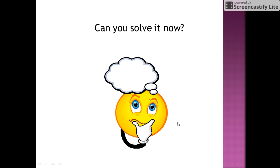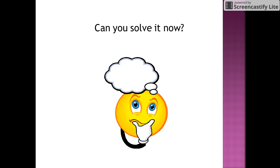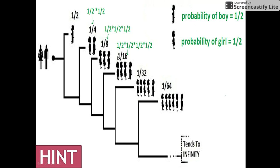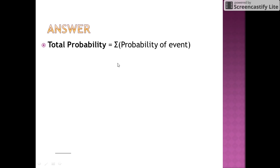So can you now solve it? The concept used here is the sum of the series 1/2 + 1/4 + 1/8 and so on, which is an infinite geometric progression. The sum of such a series is found using A/(1 − R), where A is the first term and R is the common ratio. The total probability of any event equals the sum of probabilities of all events, so 1/2 + 1/4 + 1/8 + ... = 1.